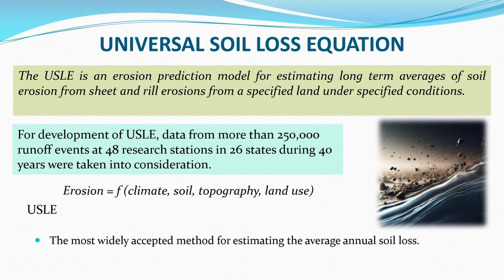Erosion is a function of climate, soil, topography, and land use. Climate — basically rainfall — if rainfall is heavy, we can expect heavier soil loss. It depends on soil type: texture and structure. If the soil is loose, erosion will be more. Topography also matters: on sloping land, runoff travels faster, detaching and transporting soil particles. Land use also varies — the land may be barren some months and under dense vegetation others.